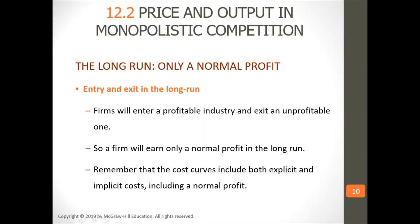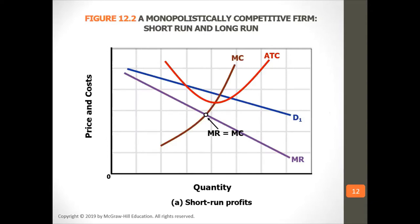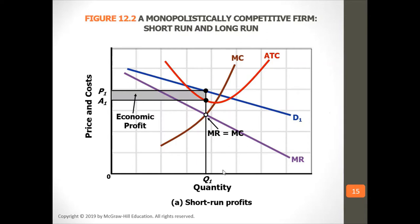Firms will enter profitable industries and exit unprofitable ones. If an industry is making profits, firms will enter; if it's not making profits, firms will exit. They combine explicit and implicit costs together — both cash costs and non-cash costs, like the cost of not working and the cost of missed opportunities are factored in. MR equals MC is the point where firms produce in any market to maximize profits. They always want to produce at marginal revenue equals marginal cost because that maximizes profits.